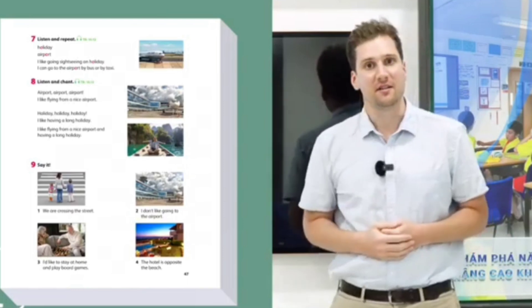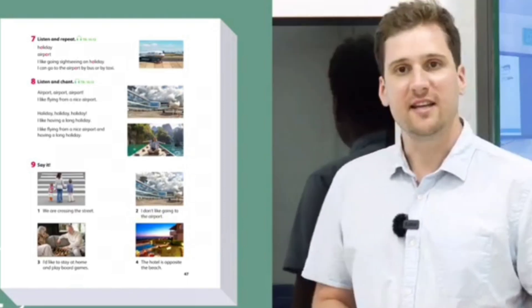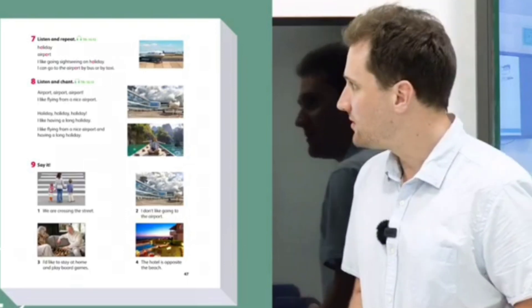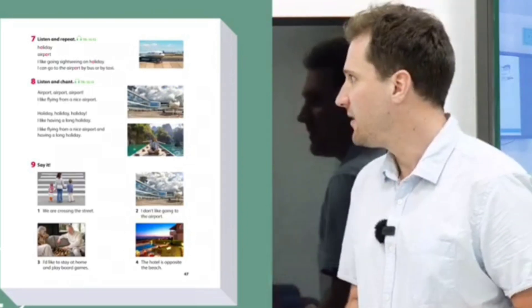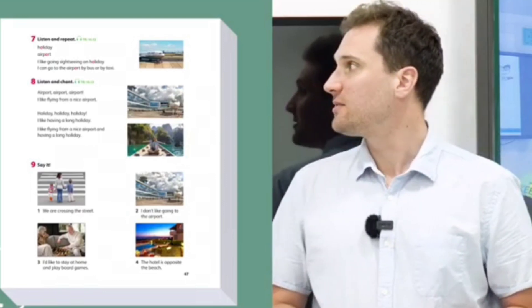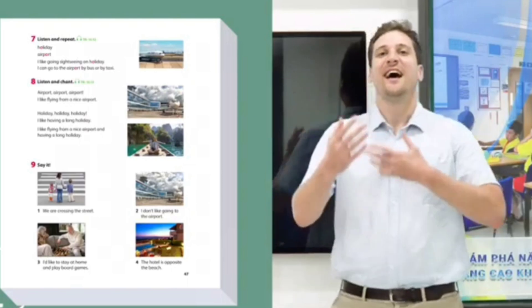So holiday. Airport. I like going sightseeing on holiday. I can go to the airport by bus or by taxi. Now as the students are getting more familiar with those two sounds, those words and even some sentences, you can then move on to exercise 8.